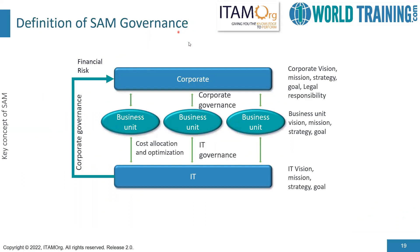We now have here the definition of SAM governance. In this picture you will see the corporate at the top and IT at the bottom, with IT supporting the various business units. The corporate governance comes from the top and has to be complied with by all departments below it, all the functions in the hierarchy from top to bottom of an organization. The corporate level deals with the corporate vision, mission strategy, goals, and legal responsibilities. At the business unit level, we have the business unit vision, mission strategy and the goal of that individual business unit.